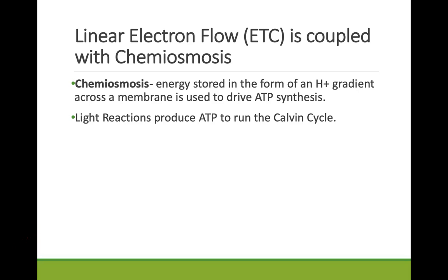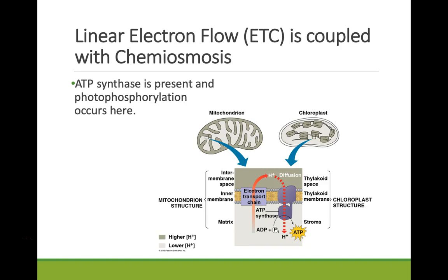The light reactions produce ATP. ATP is needed because the Calvin cycle is an anabolic process — a building process where we go from low-energy carbon dioxide to high-energy G3P, and we need ATP to power that building. Just like in oxidative phosphorylation, ATP synthase is the enzyme that uses that hydrogen ion gradient to produce ATP. In linear electron flow, we don't call it oxidative phosphorylation — we call it photophosphorylation, because it is light energy that is powering the phosphorylation of ADP to ATP.